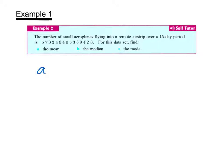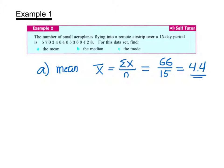Let's start with the mean. Mean we represent with x bar, and it's the sum of all the data values divided by n, which is the number of data values. If I take all of these numbers and add them up, I get 66. And n is 15. If I do that out, I get 4.4 as the mean number of airplanes.